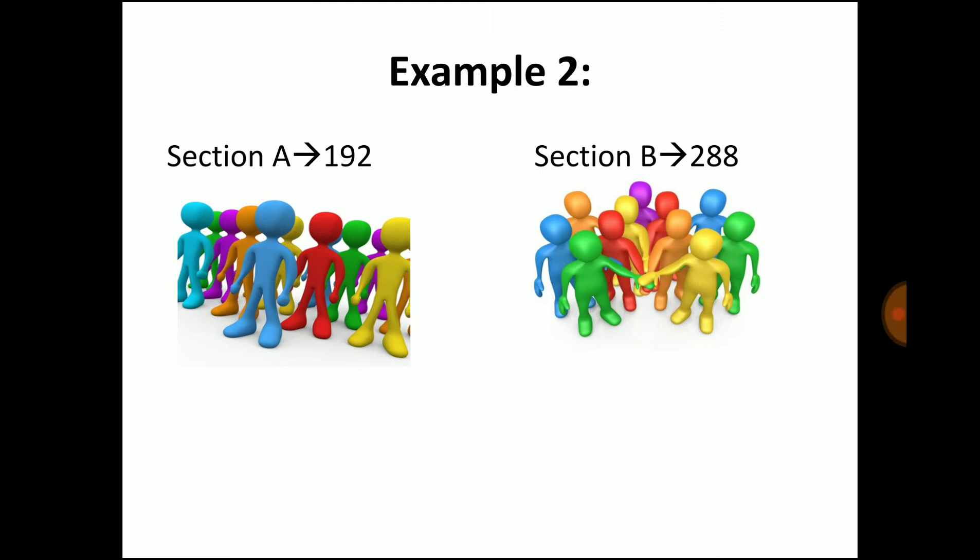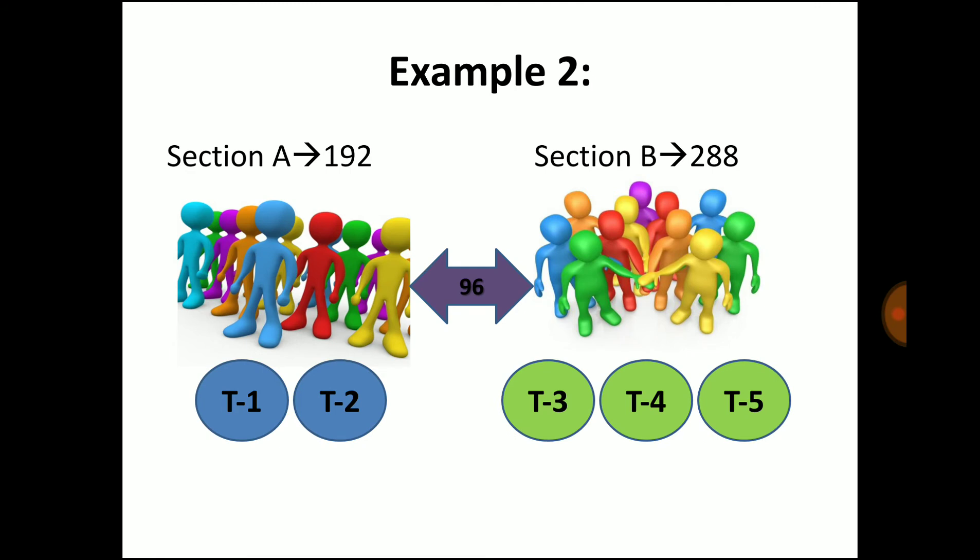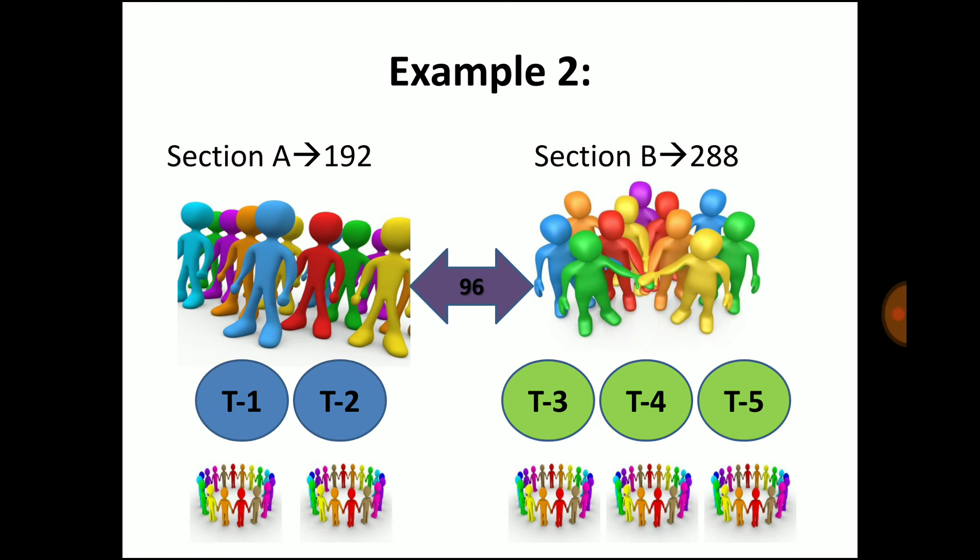The answer lies in HCF. The HCF of 192 and 288 is 96. So you can divide section A into 2 groups, 96 and 96, 2 teams, and section B into 1, 2, 3 teams. So totally you can frame 5 such teams and the biggest possible team size is 96. I hope you are clear with this concept.